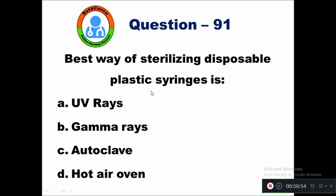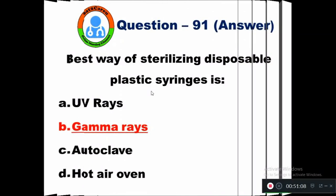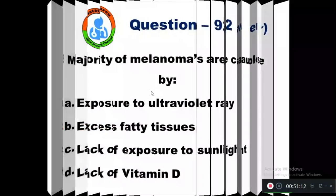Question 91: Best way of sterilizing disposable plastic syringes is — option A UV rays, B gamma rays, C autoclave, D hot air oven. Option B gamma rays is the right answer.